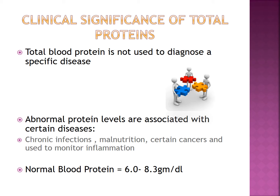So what is the clinical significance of a total protein test? Total blood protein is not used to diagnose a specific disease. However, abnormal protein levels are associated with various diseases, including chronic infections, malnutrition, certain cancers, and it is used in monitoring inflammation. It is important to note that normal blood protein is between 6.0 and 8.3 grams per deciliter.